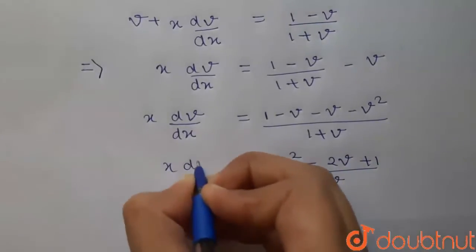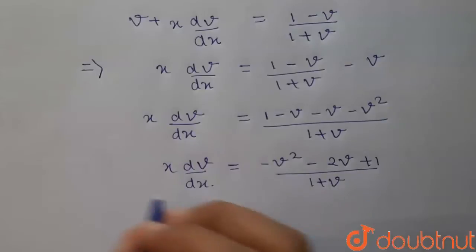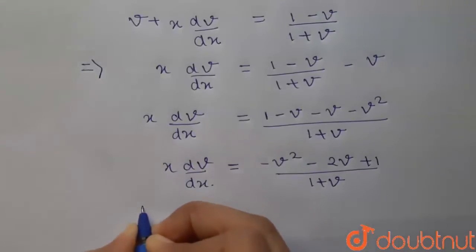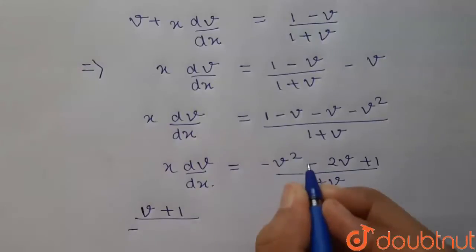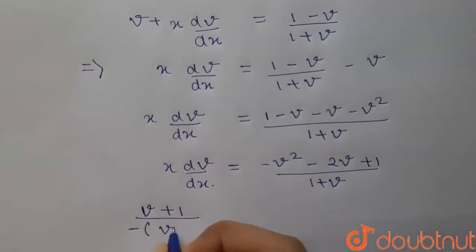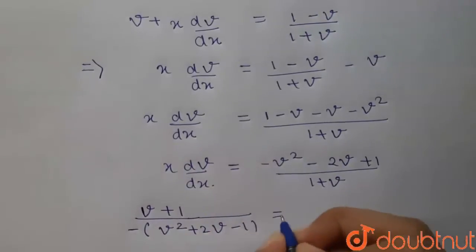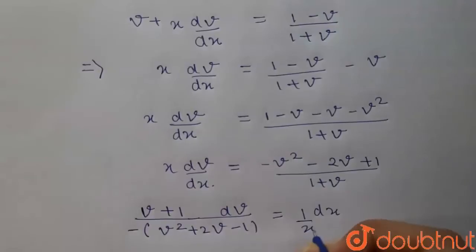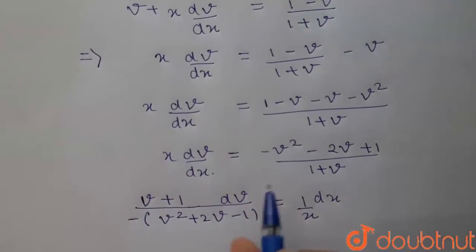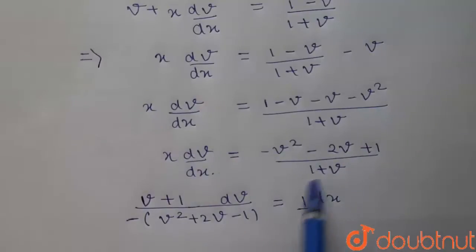Now let us do cross multiplication. Taking out minus common, this becomes (v + 1)·dv / (v² + 2v − 1) = −(1/x)·dx. We have taken minus common and done cross multiplication so that dv comes with the v terms and dx/x comes together on the other side.